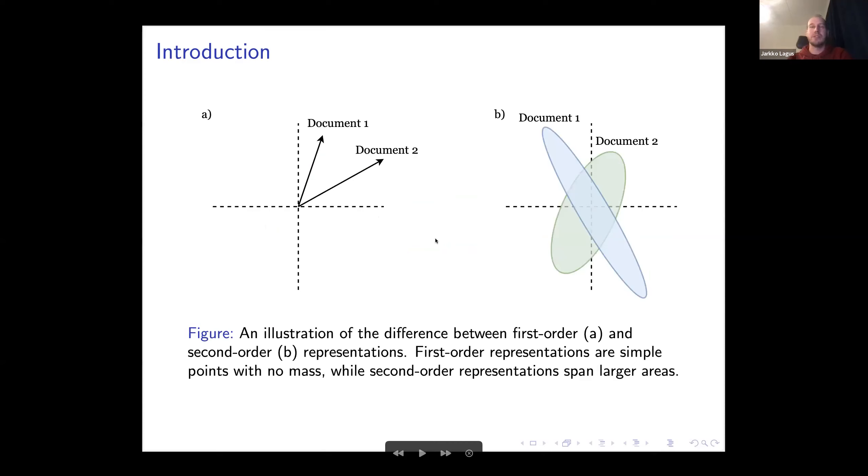Here's the illustration of how these look in the space. The documents, when presented with vectors, are just points in the embedding space. When we represent them with the covariance system, we get these elements that have mass and can be distributed over different dimensions in different ways. So they capture more information in that sense.